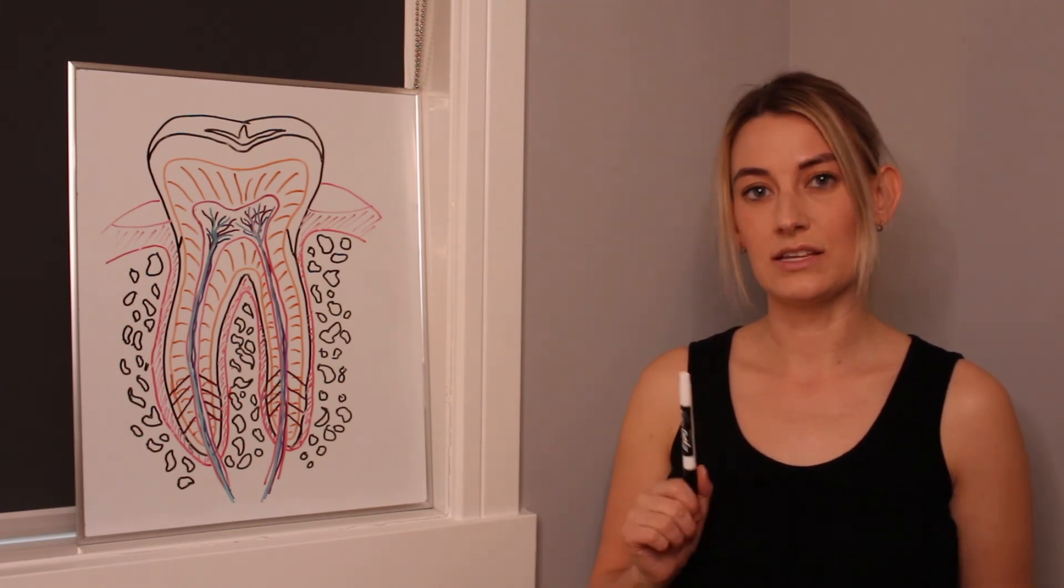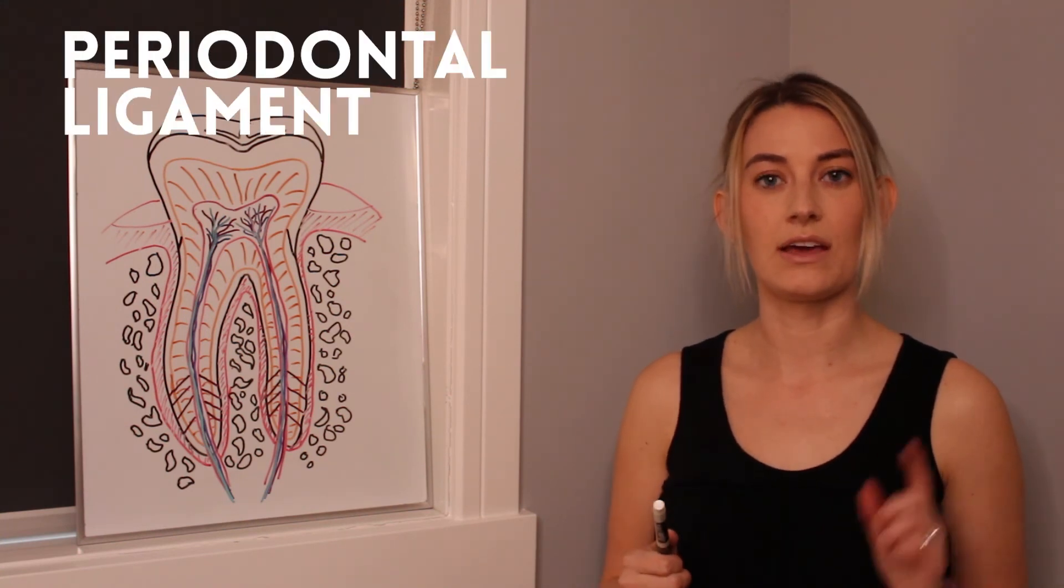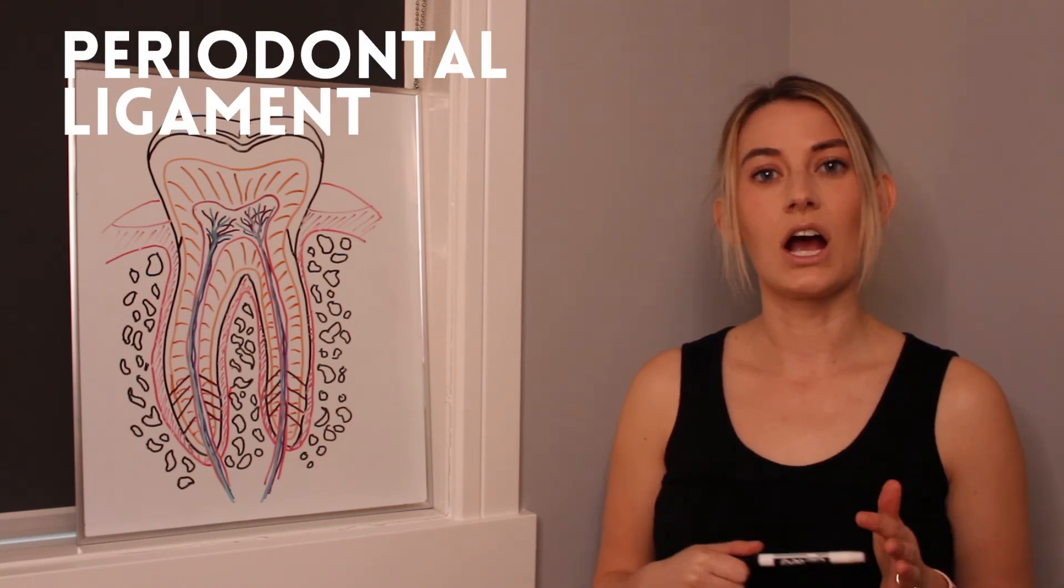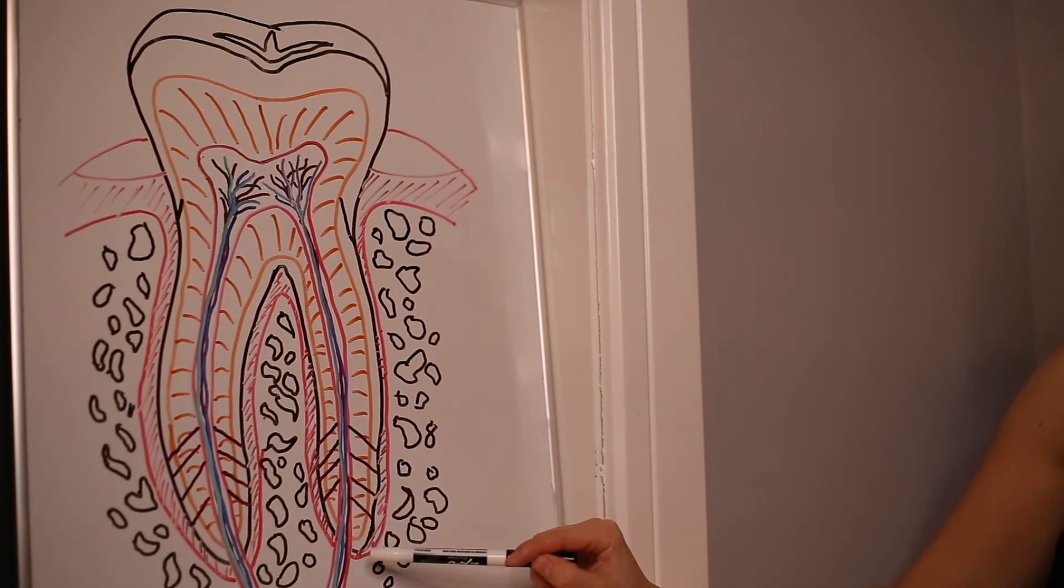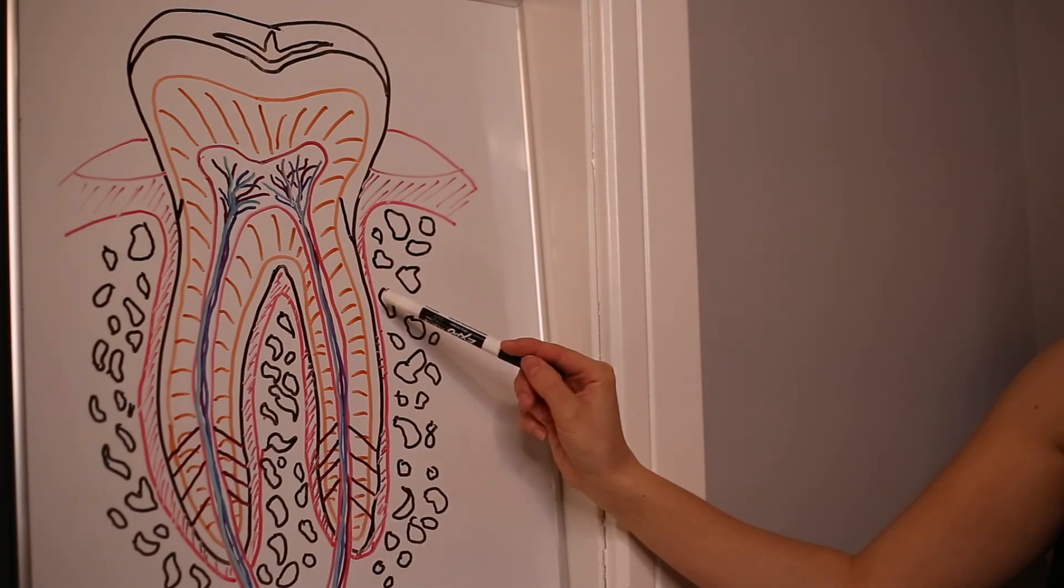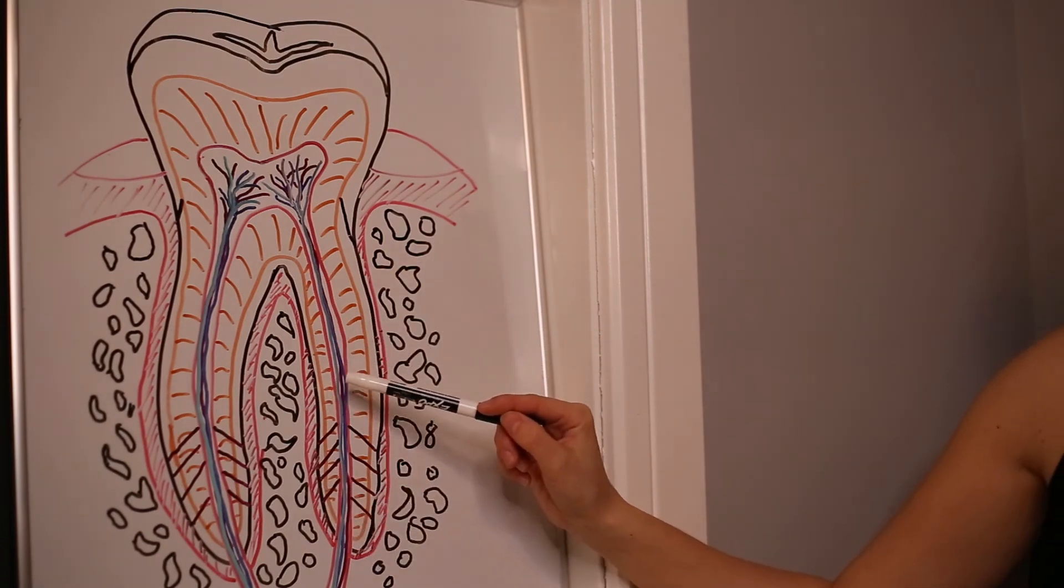In between the tooth and the bone is something that we call that periodontal ligament. Now I mentioned it before, what these are are little fibers that anchor from that bone, so you can see them here in the kind of red coloring, they anchor from the bone into the cementum of the tooth.